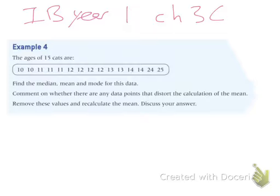Chapter 3C, we're going to start off with an example here, bringing in some of the things we did in parts A and B. Here are some ages of 15 cats listed. The nice thing is they're already in order. They want you to find the median, the mean, and the mode for this data point.